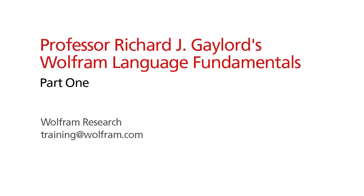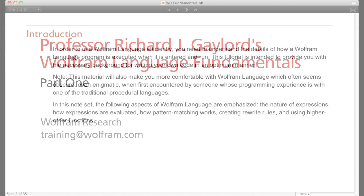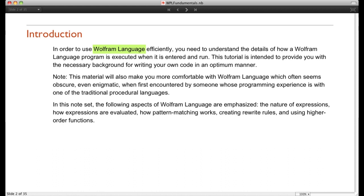The purpose of this tutorial is to explain how the Wolfram programming language works. The Wolfram language is basically a paradigmatic language, which means that a person can program in the language using procedural techniques — things like do loops — or functional programming, or a variety of other programming paradigms.